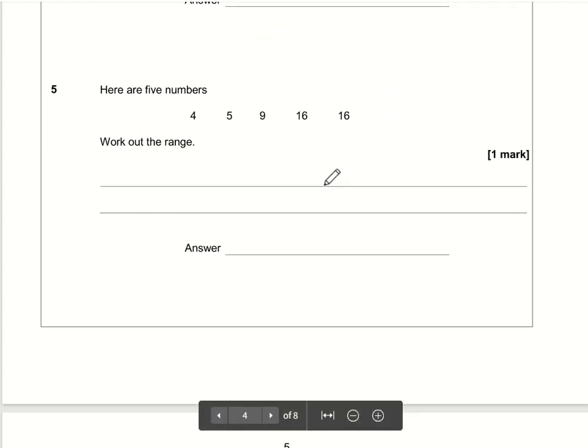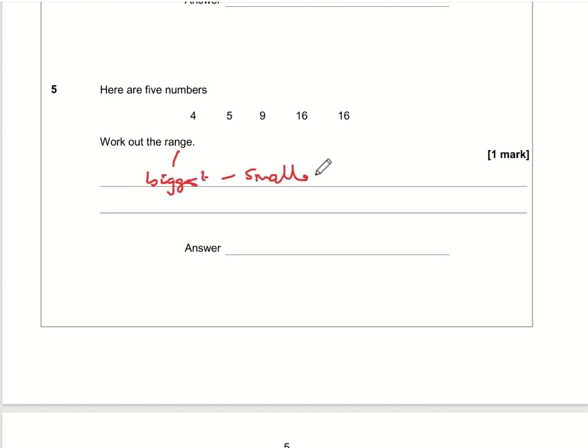For number 5, we want the range. The range is the biggest take away the smallest, and they appear to be in order, so it's just 16 take away 4 which is 12, so the range is 12.